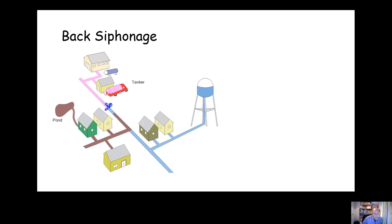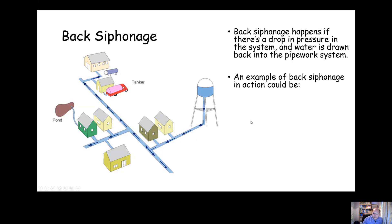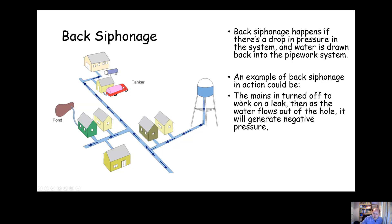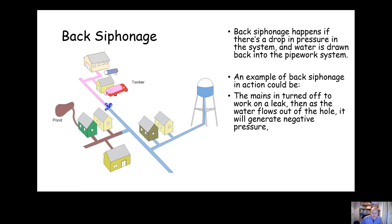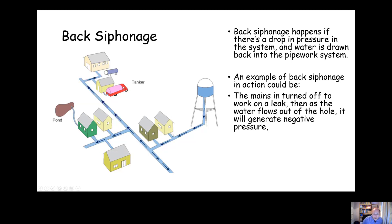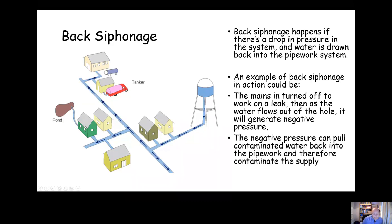Another example is back siphonage, which is probably the main issue. It can be caused by a drop in pressure downstream — for example, caused by a leak — which could then cause water to be drawn back into the system because of negative pressure, ending up with contaminated water being pulled into the mains and causing a risk to health. For example, if the mains is turned off to work on a leak, the water flowing out creates negative pressure which can pull contaminated water into the pipework and contaminate the supply.